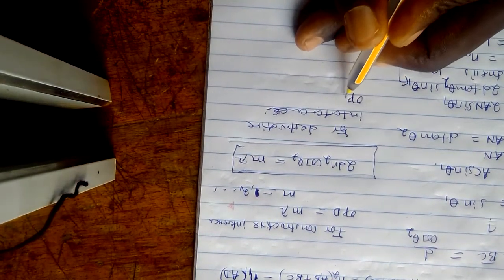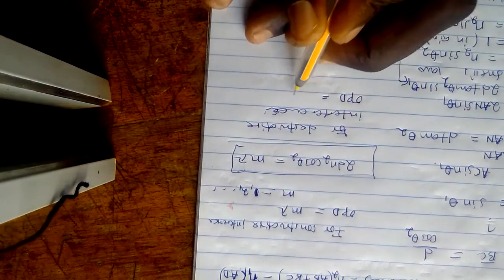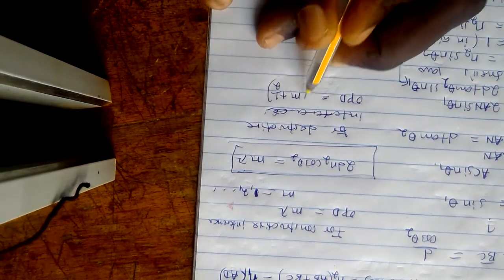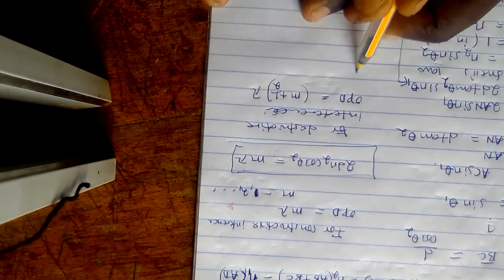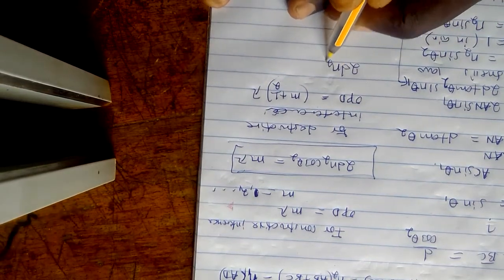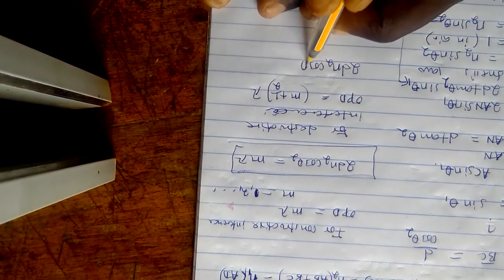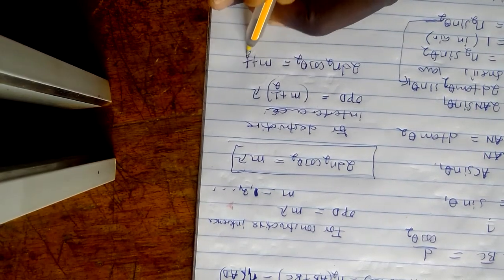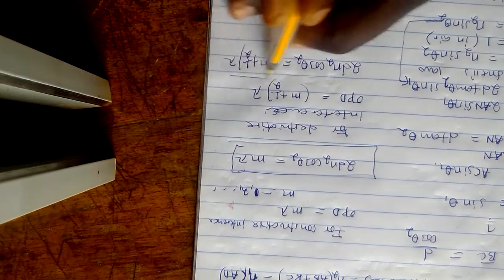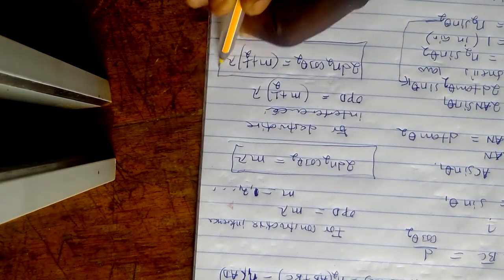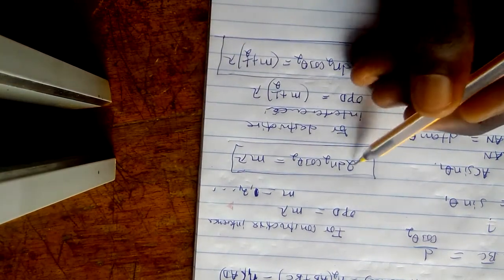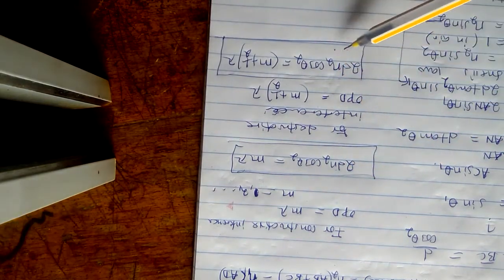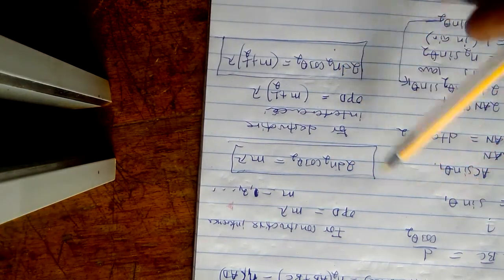For destructive interference, the optical path difference equals (M + 0.5)·lambda. These are the two key conditions for interference by division of amplitude.